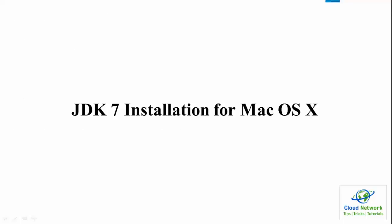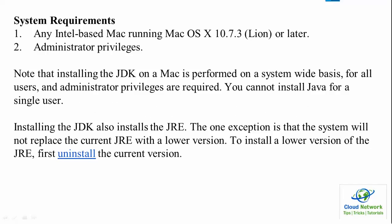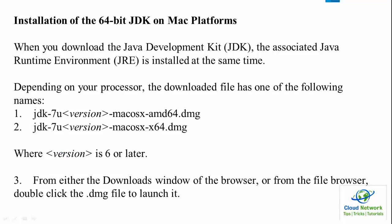Next is JDK installation for Mac OS. If you want to install JDK on Mac, your system must meet requirements: you need administrator privileges, and when installing JDK, JRE is also installed along with it. One exception is that the system will not replace the current JRE with a lower version. To install a lower version of JRE, you need to first install the previous version, then install the latest version. For 64-bit supported JDK, when you download JDK, JRE will also be installed at the same time.